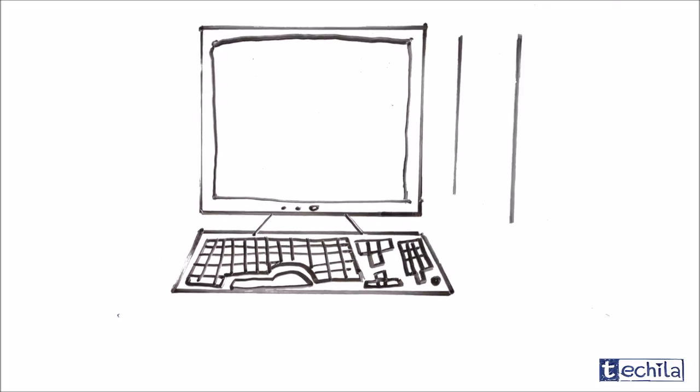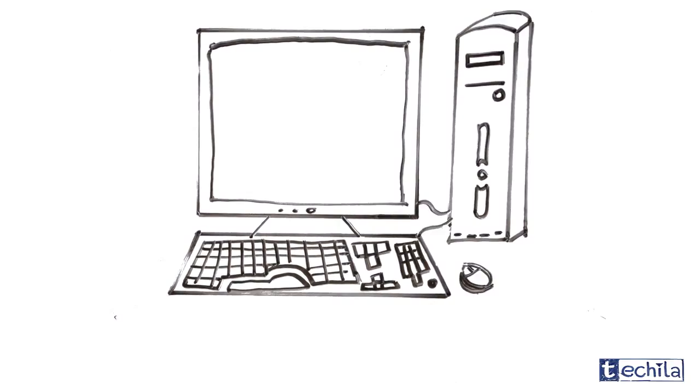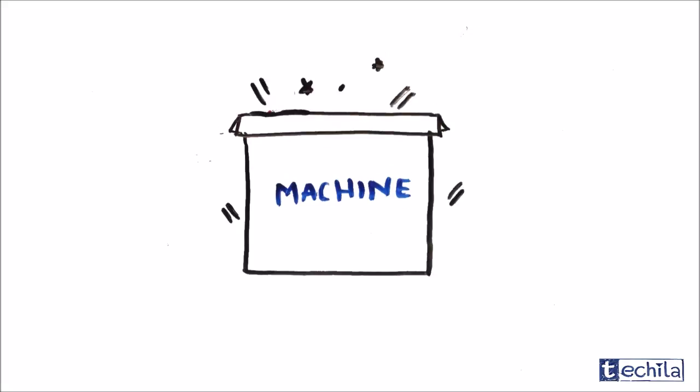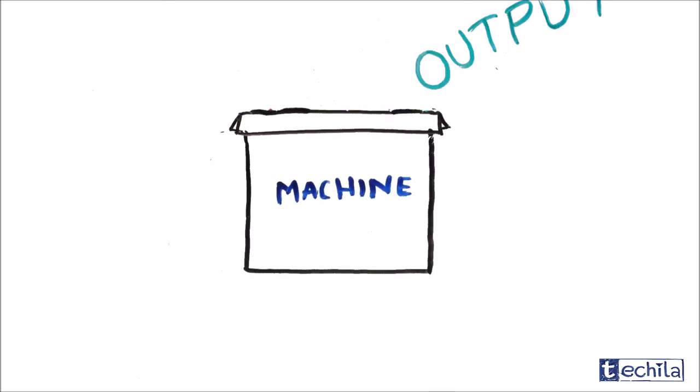In our school days we have been studying that a computer is a device that can be instructed to carry out an arbitrary set of arithmetic and logical operations automatically. But that definition of computer was boring. Let's make it simple. A computer is a machine that is able to take input or information, do some work or process the information to make an output.